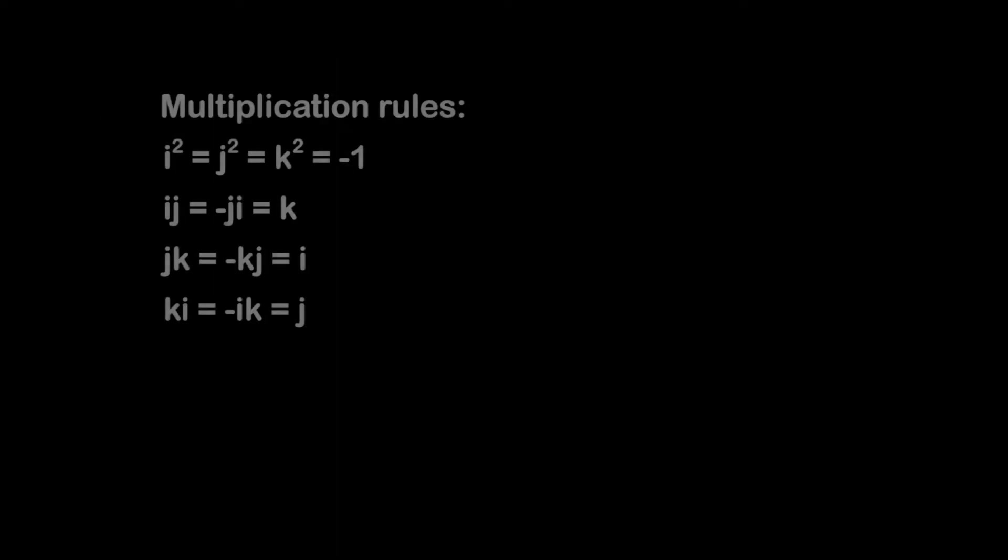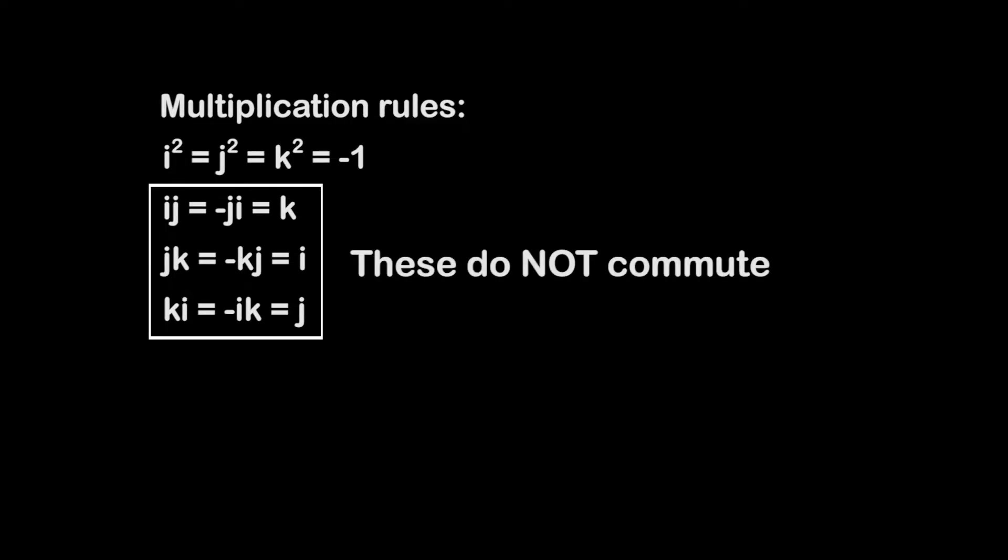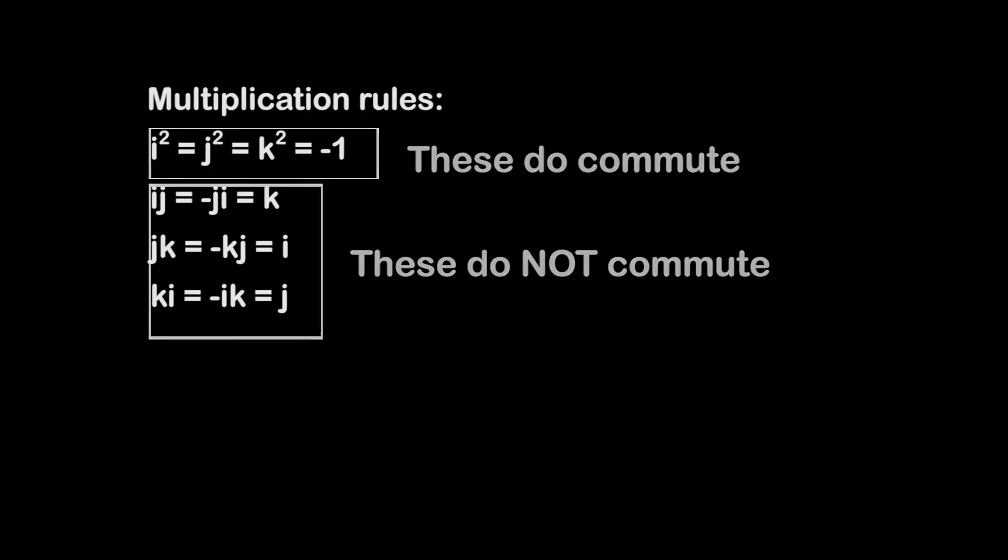Let's take a look at the multiplication rules of quaternions. These rules don't make it immediately obvious what happens rotation-wise when two quaternions are multiplied. Note, though, that any two fundamental quaternion units being multiplied together do not commute. One is the negation of the other. But any fundamental quaternion unit multiplying itself or a real number does commute. Keep this in the back of your mind. It will be important later.